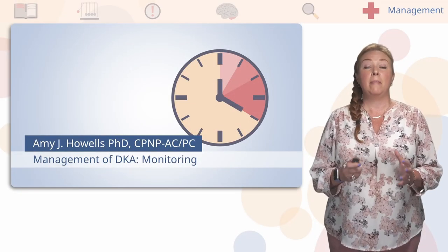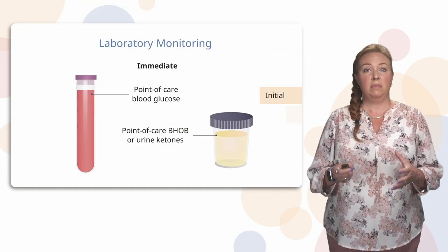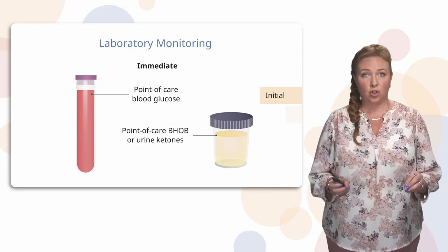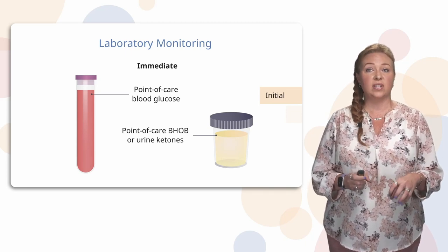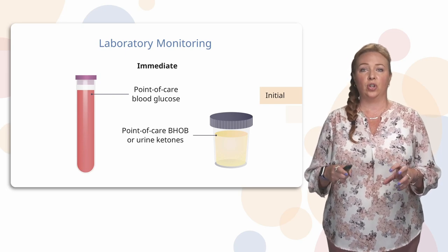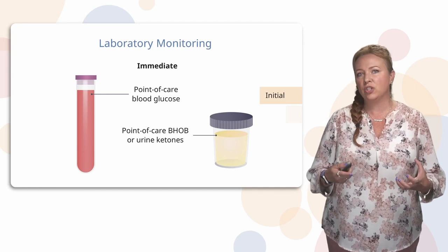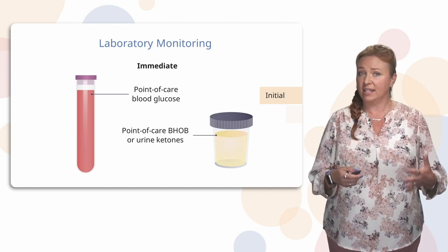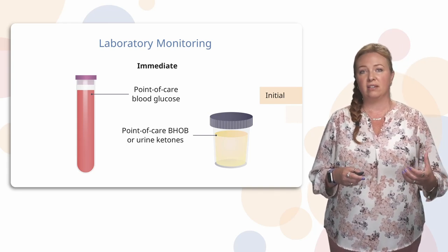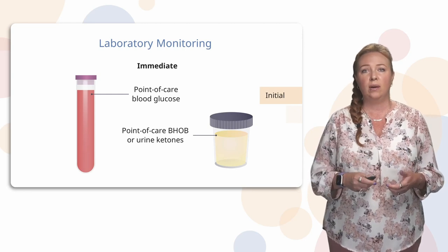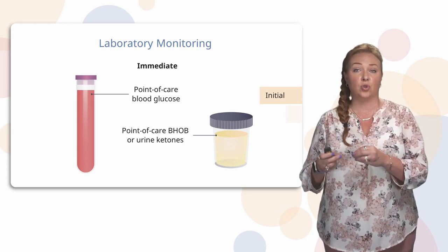We're going to talk about the management of DKA once these patients come in. Pretty immediately, you're going to start some initial laboratory monitoring. You're going to get a point-of-care blood glucose and a point-of-care beta-hydroxybutyrate or urine ketones. Point-of-care means we have a way to measure these without sending samples to the lab — in your unit, you can check that glucose and the ketones right away.